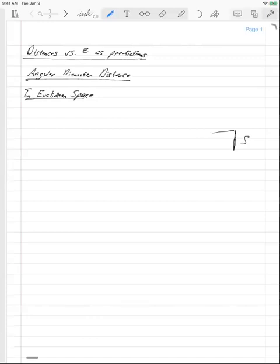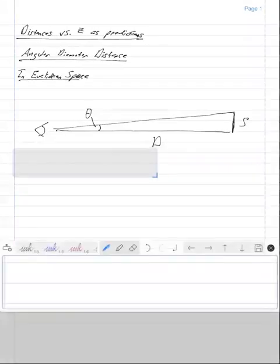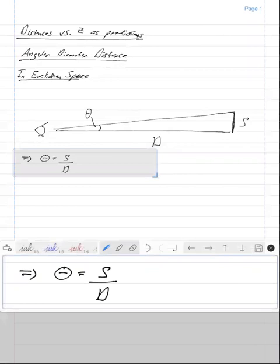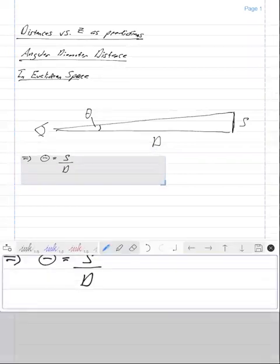And we're going to observe this object from some distance away D and from this person's perspective, let's put an eyeball over here. From this person's perspective, this object, which has a proper size s subtends an angle theta on the sky. And this leads to the angle that this subtends is equal to the proper size of the object divided by the distance.